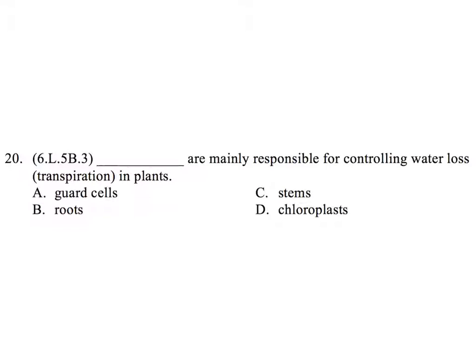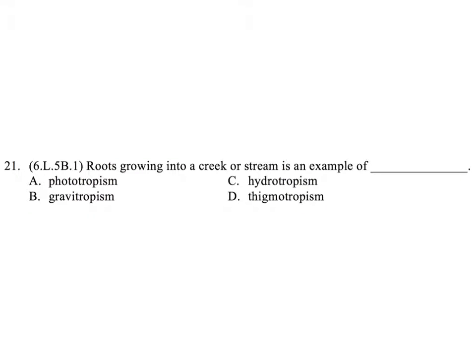Question 20. Blank are mainly responsible for controlling water loss, transpiration, in plants: A. Guard cells. B. Roots. C. Stems. D. Chloroplasts.